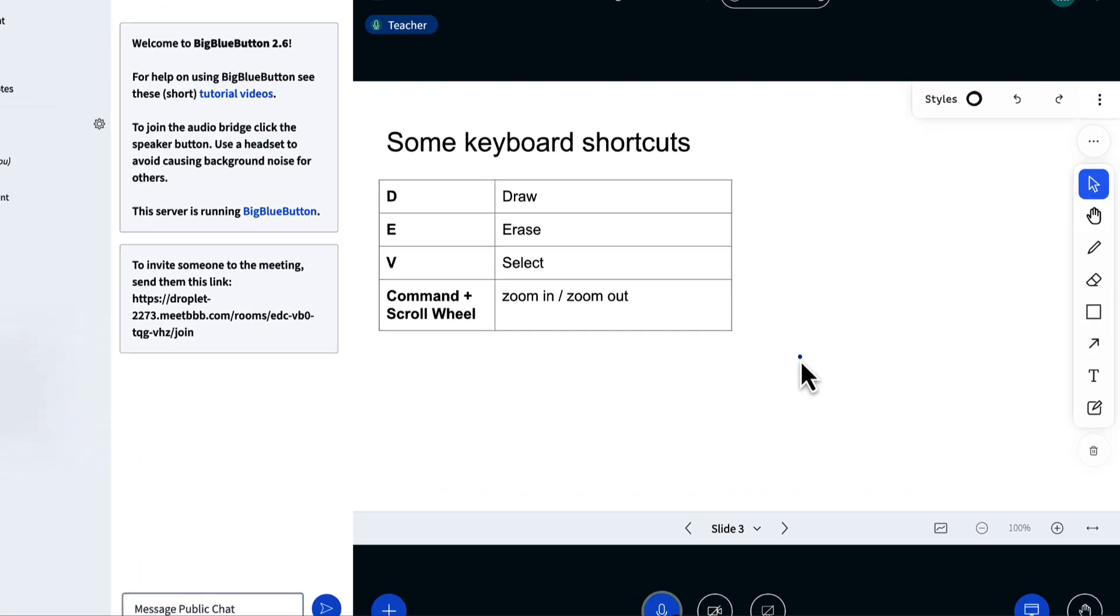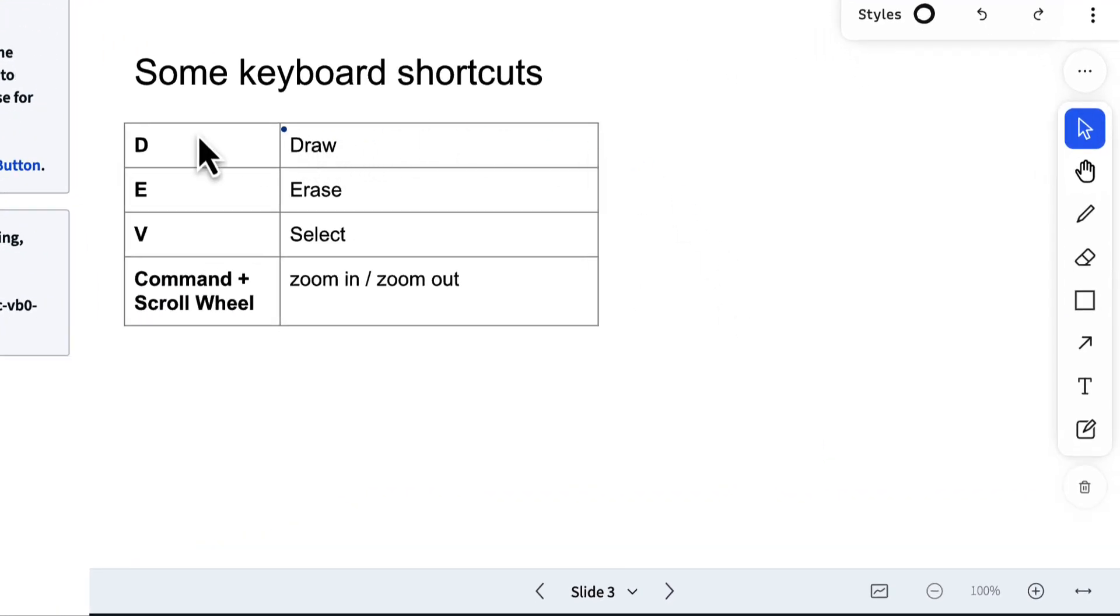There are also a couple keyboard shortcuts that make it very easy. If you think of DEV - Draw, Erase, Select - I hit the D key, and now I'm drawing again. If I want to erase, I hit the E key. I'm using both hands, one for the mouse. And if I do the V key, I can select.